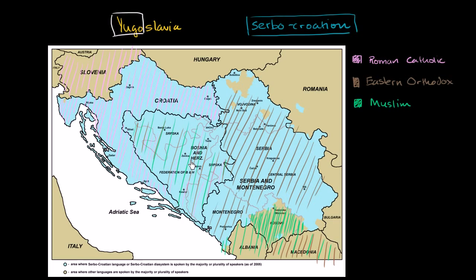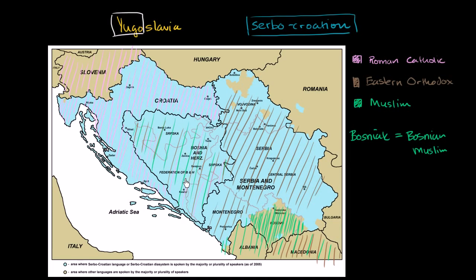Bosnia and Herzegovina is where things get really mixed up. Roughly half of the population — though it's been shifting over the centuries — follows Islam as the dominant religion. When people talk about a Bosniak, they're referring to a Bosnian Muslim. Bosnia and Herzegovina also has significant fractions of Serbs who are Eastern Orthodox — about a third of the population — and a pretty sizable Roman Catholic population, which we could call Bosnian Croats.